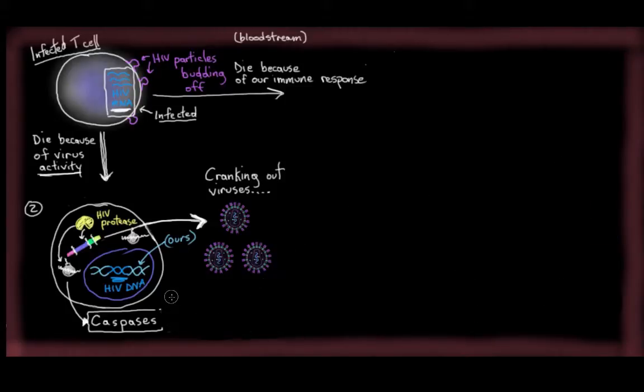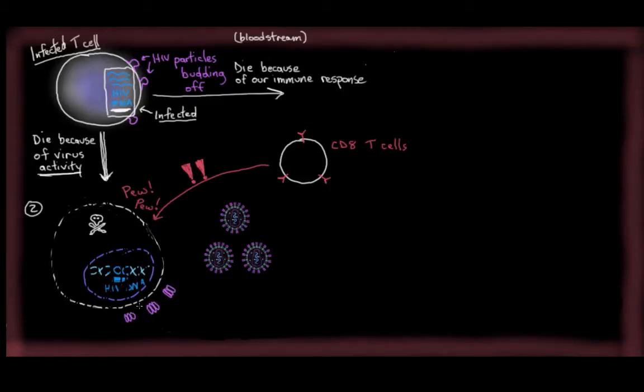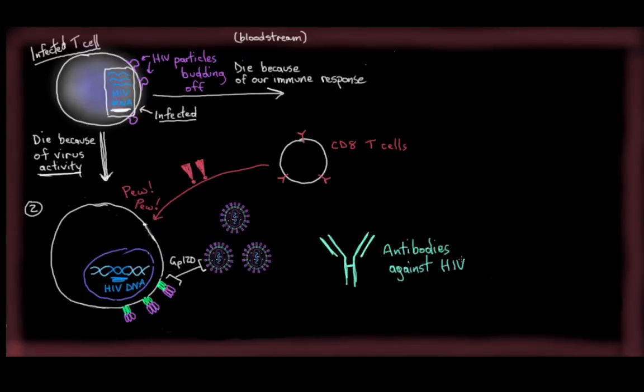So there are other ways that infected T cells can die too. For example, we've got another group of T cells called CD8 T cells. And when they see an infected CD4 cell, they get pretty upset and they'll kill it off. And the reason it knows the CD4 cell is infected is because infected CD4 cells start to display certain HIV proteins on their surface, like GP120 from the HIV envelope. Another thing to keep in mind is that after a month or so of being infected, we start to make antibodies to HIV. So these anti-HIV antibodies might stick onto infected T cells and mark them for destruction by other immune cells.